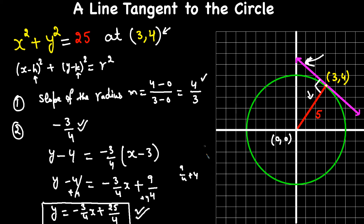Thanks for watching. Practice a couple more examples. They might give you an equation where h and k are not zero. In that case, when writing the slope of the radius, instead of using (0, 0) as the center, use the given (h, k) values. That's the only difference. Practice more examples and you'll be good to go.